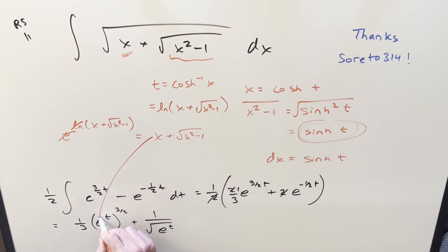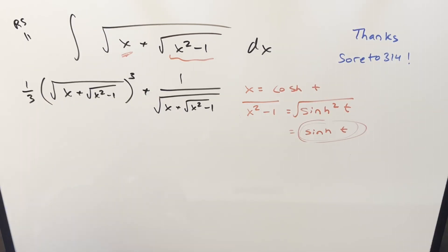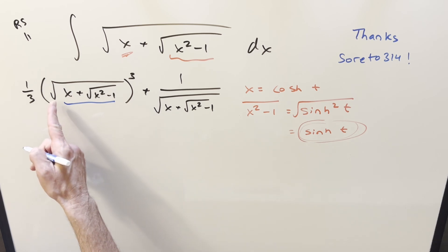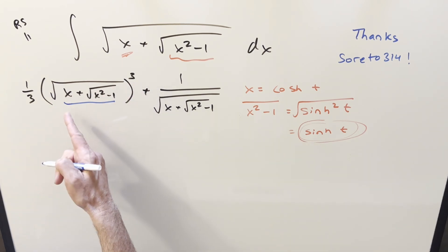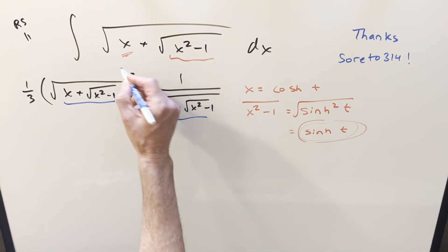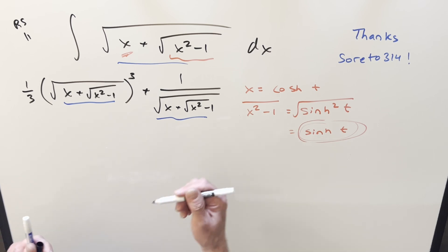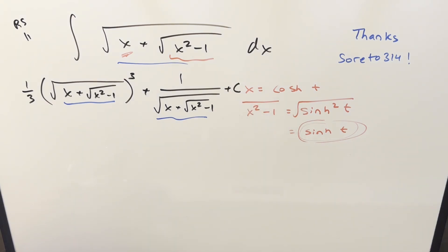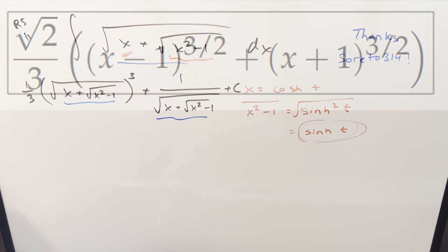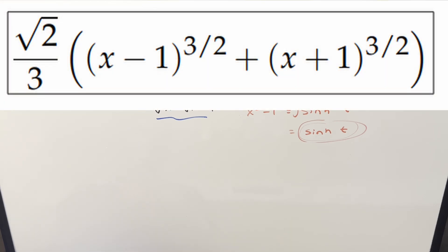Plugging that in, we note that e to the t placed inside the radical for the 3 halves gives the same expression we started with. We now have the result back in x, so this could be our solution — just add a plus c and be done. The only issue is this looks nothing like the solution from the other video.